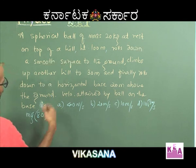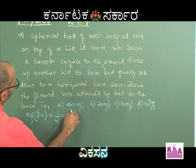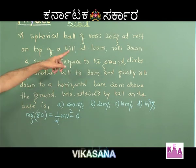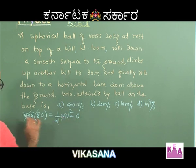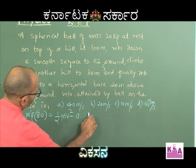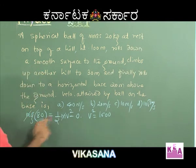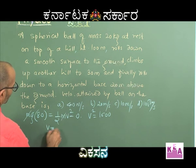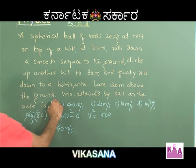This work done should be equal to change in kinetic energy, which is final minus initial. Final is half m V² and initial was 0 because the particle had started from rest. M gets cancelled and you can calculate V². V² will be equal to 1600 — 80 into 2 is 160, 160 into 10 is 1600. So V is going to be equal to 40 meters per second, making the correct option A.